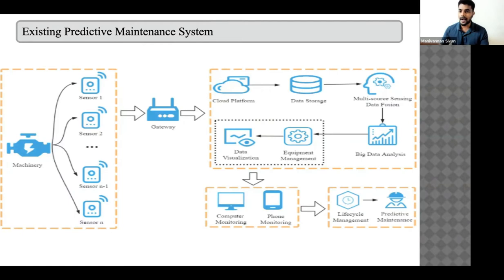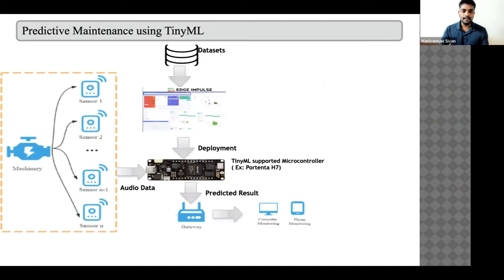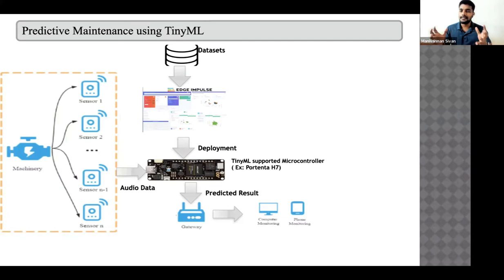TinyML impacts this in two major ways. First, it cuts the cost of total infrastructure. For an industry with 1,000 or even 4,000 machines, you need very good, high-cost infrastructure to collect and securely transfer all that data. TinyML eliminates much of this cost.